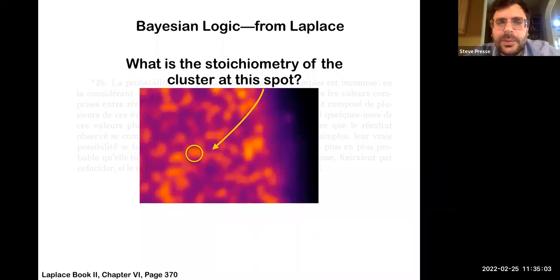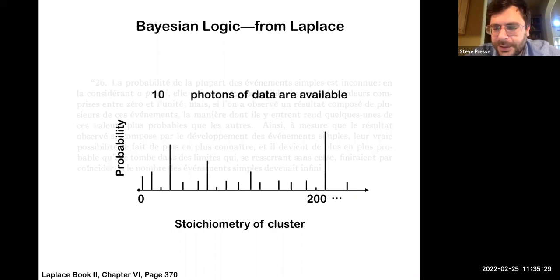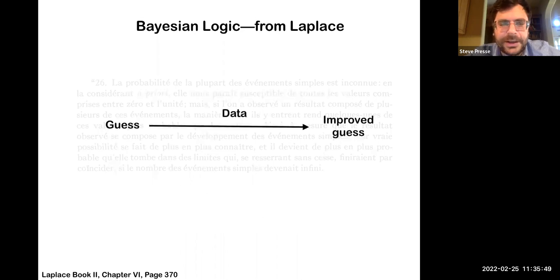So one basic question one could ask is what is the stoichiometry of a particular cluster at a location. Now, following Laplace's logic from the paragraph sort of faded out, what we would basically do is to start off by saying that any stoichiometry is possible. This is normally what people call priors in Bayesian logic or within the Bayesian framework. But ultimately, as we start increasing the number of photons that reach our detector, we start acquiring a more and more increasingly precise estimation for what the stoichiometry of the cluster ultimately is.